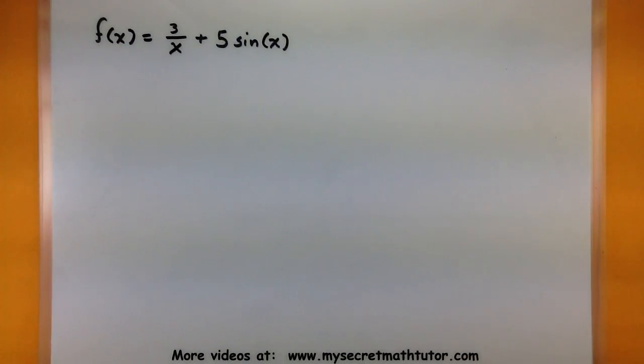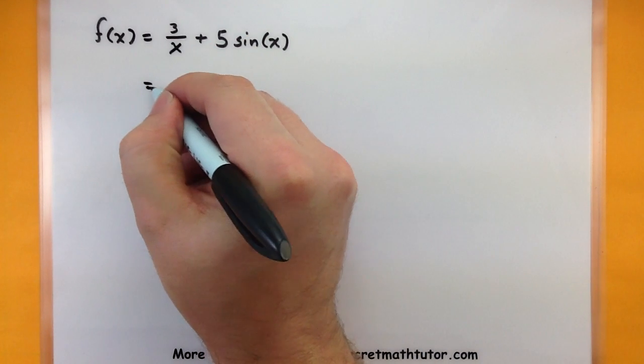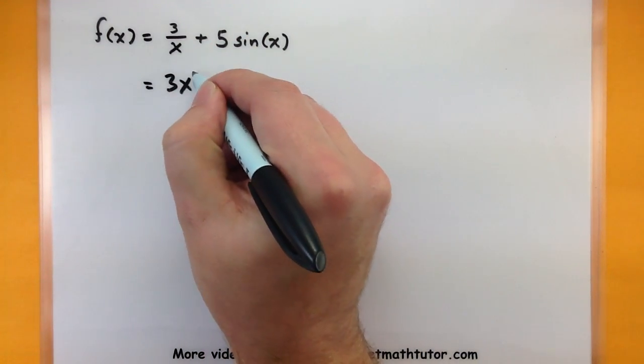For this first one we want to figure out what is the derivative of 3 over x plus 5 sine of x. And if it helps you might want to look at this first one as 3x to the negative 1.